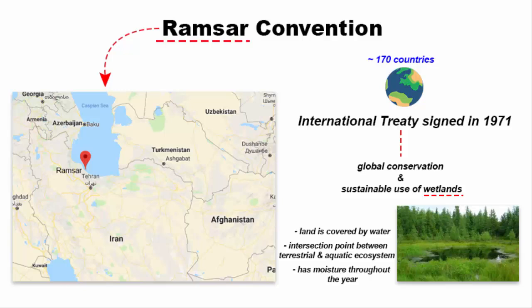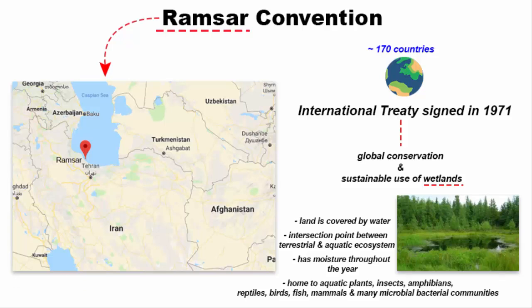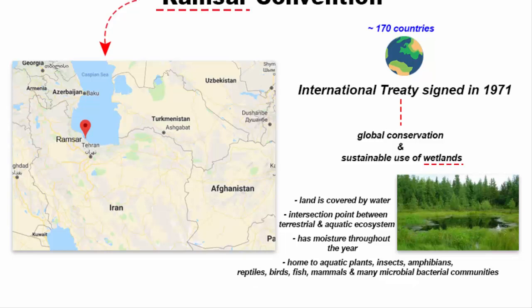Wetlands have moisture all throughout the year. That means they are home to aquatic plants, insects, amphibians, reptiles, birds, fish, mammals, and many microbial and bacterial communities. And that's what makes the wetlands the most productive ecosystem in the world when compared to rainforests and coral reefs.